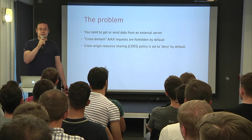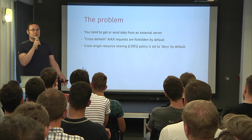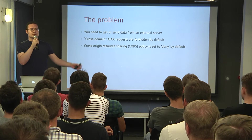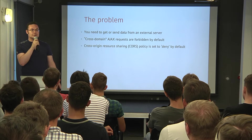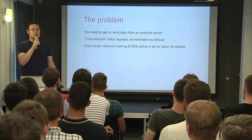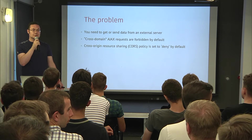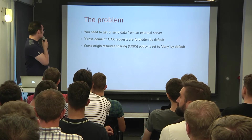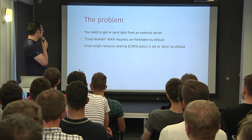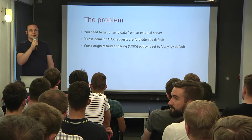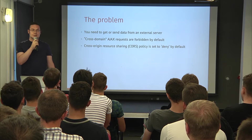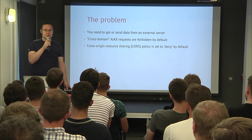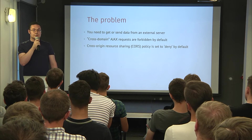Sometimes as a front-end developer you need to get some information from another server — not your own server. You need to get information for example from Instagram, Facebook, Twitter, almost any API, and it's not on your domain. Cross-domain AJAX requests are forbidden by default. Every modern browser supports cross-origin resource sharing — simply CORS — but it's denied by default in almost all services, so you can't use it.